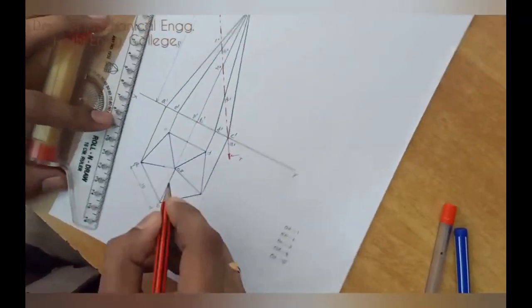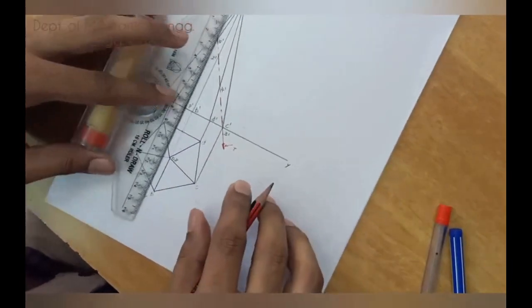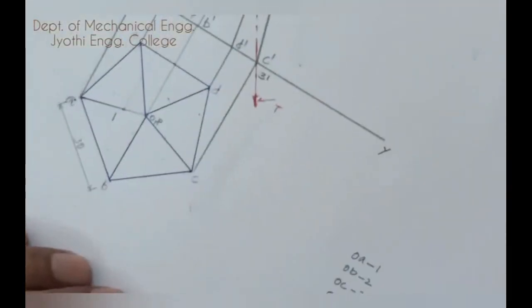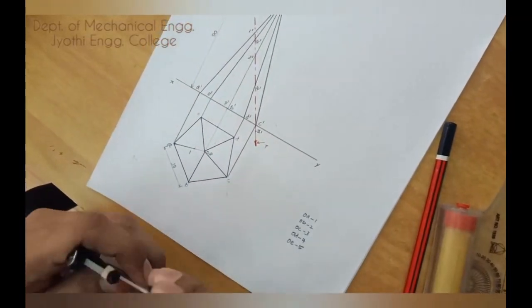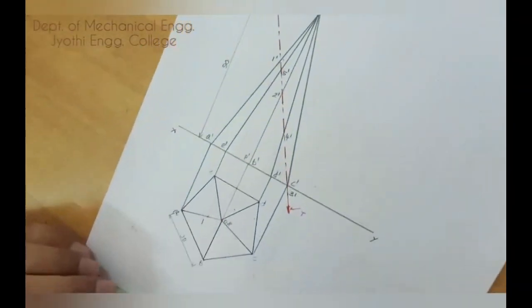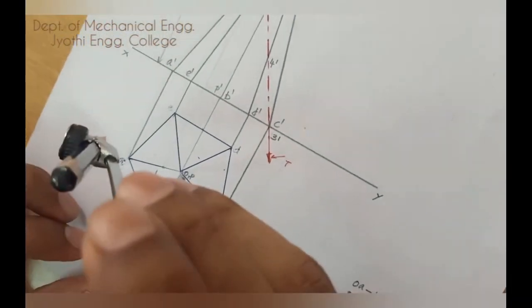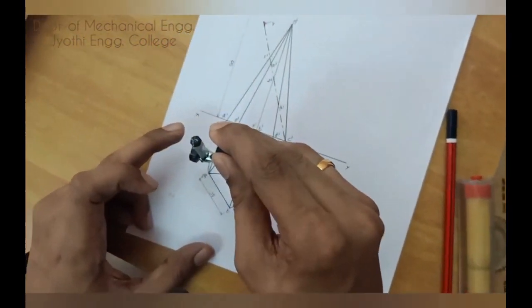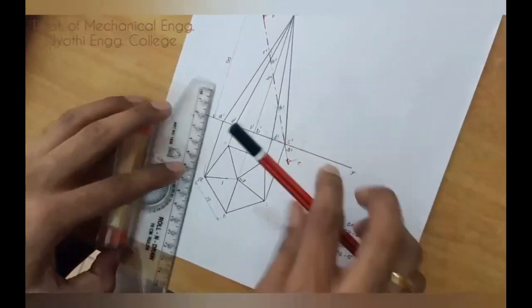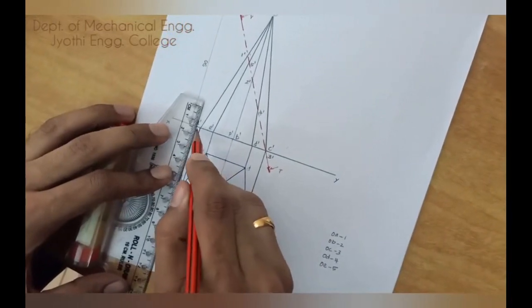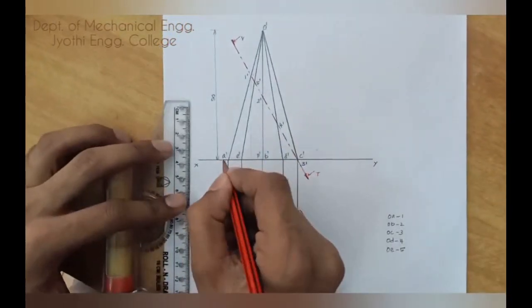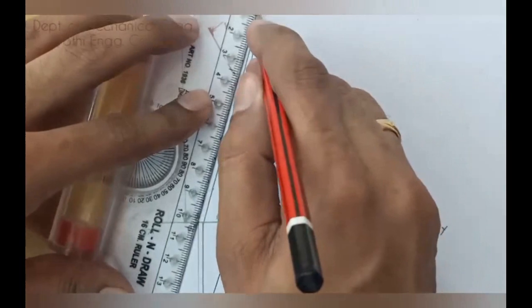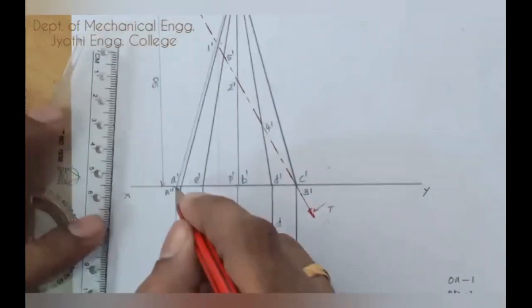This is 1. Now OB, when you project the point 2, it won't meet the line OB. So you have to draw the true length. Consider the true length. I am rotating. See here also none of the slandages are parallel to XY line. So I am rotating OA till it becomes parallel to the XY line, then projecting it upwards in order to get the true length. Marking this point as A double dash and connecting to O dash. So O A double dash is the true length.